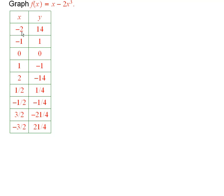So when x is negative 2, y is 14. How do I find these? I just pick particular values of x, plug them into this formula, and see what comes out for f of x, which I'm denoting as y.